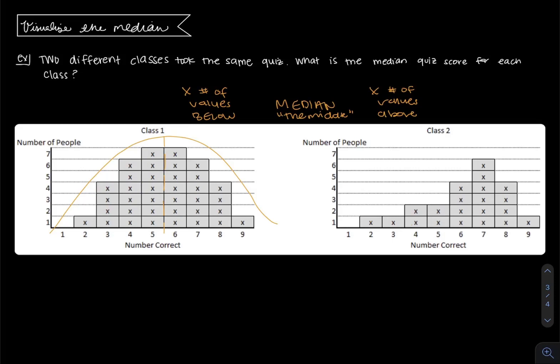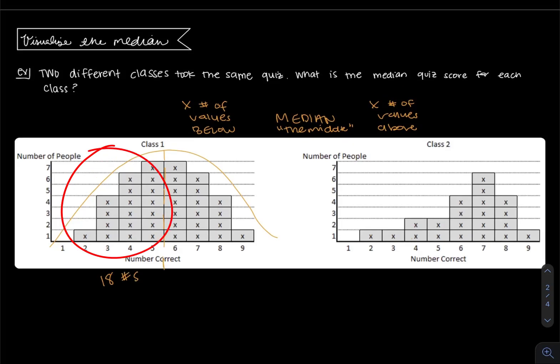if we were to count, we can see that we have 18 numbers below that center point that we found, and we also have 18 numbers above that center point. So in fact, the median is where we drew it between five and six, which the middle of five and six is 5.5.